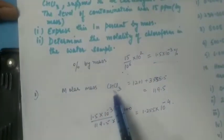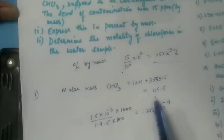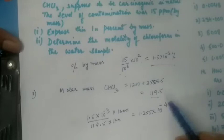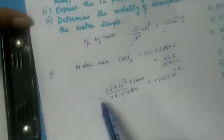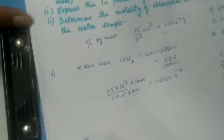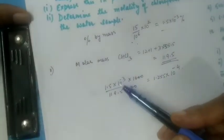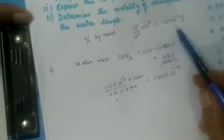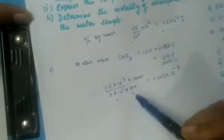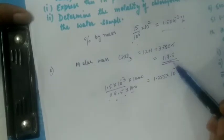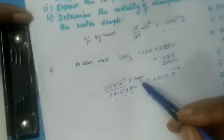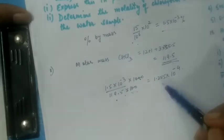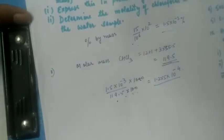To determine the molality of chloroform in the water sample: molar mass of chloroform (CHCl₃) = 12 + 1 + 3×35.5 = 119.5 g/mol. Molality = (moles of solute) / (mass of solvent in kg). Mass of chloroform = 1.5×10⁻³ g per 100 g of solution. Number of moles = 1.5×10⁻³ ÷ 119.5, and converting to per 1000 g solvent gives molality = 1.255×10⁻⁴ molal.